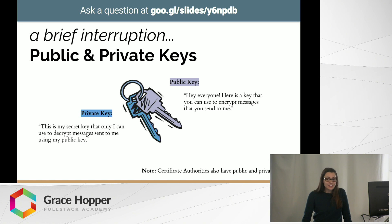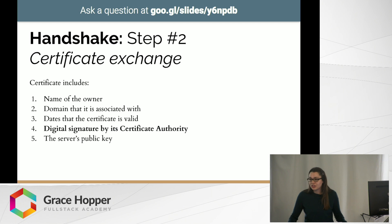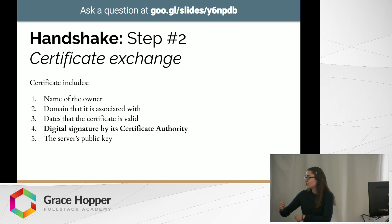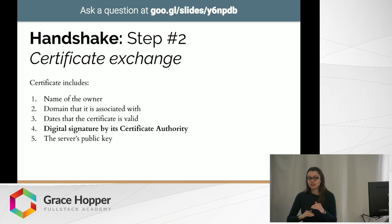To understand HTTPS, you have to know that certificate authorities also have public and private keys. The digital signature by the certificate authority on the SSL certificate — which says 'this is a valid website' — is made by the certificate authority by taking the content of the certificate, encrypting it with the certificate authority's private key, and attaching that to the end of the certificate. Anyone can then take the certificate authority's public key, decrypt the message, and check that the content of the certificate matches the content of the signature. If the two match, it means this is a valid certificate from a certificate authority, so you know the server is legitimate.